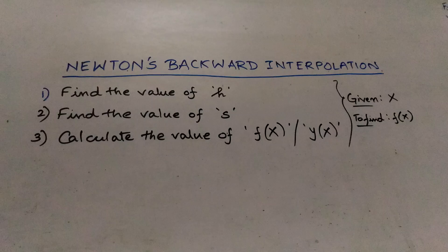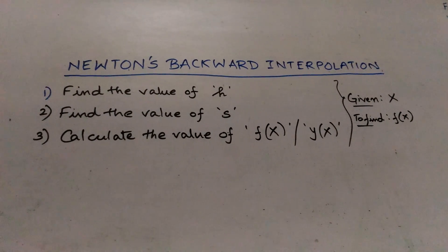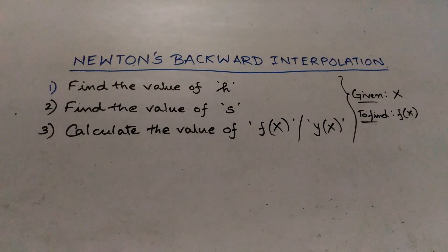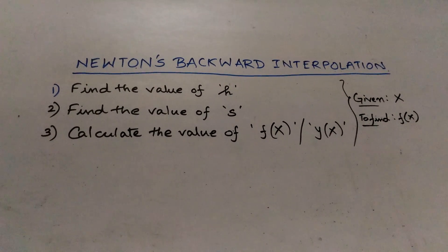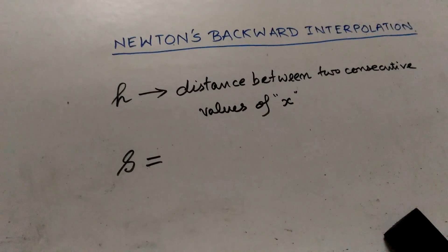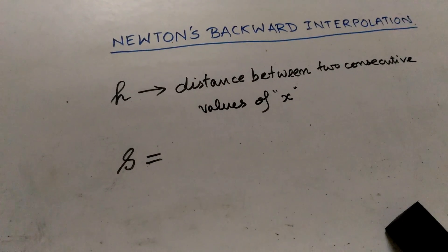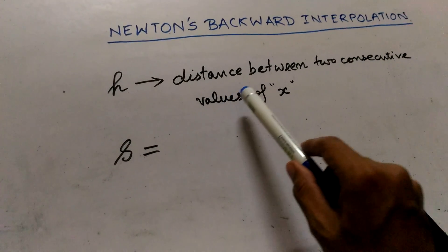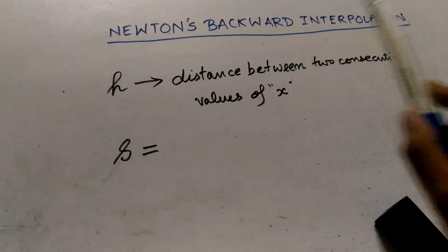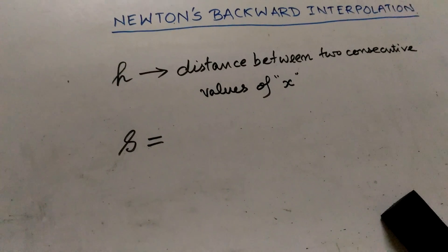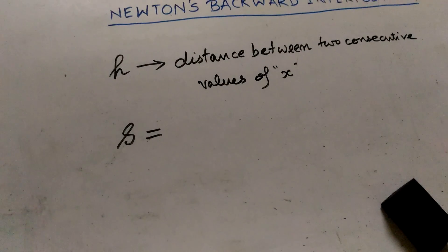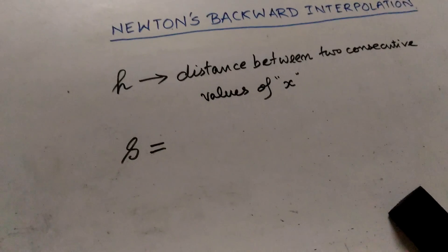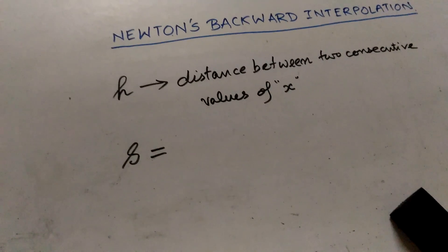Both f(x) and y(x) are the same. Now, what is H? H is the distance between two consecutive values of x. A table will be given containing values of x and values of y or f(x). The distance between two consecutive values of x will be the value of H.